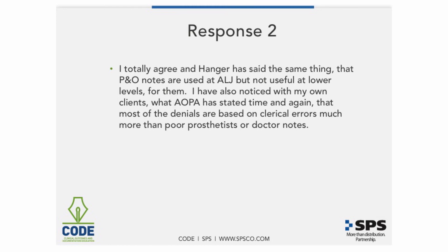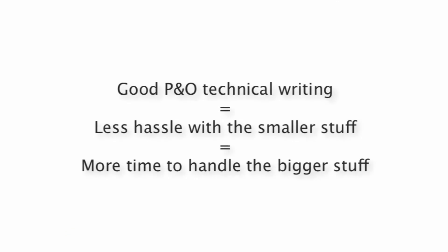I totally agree with what they're saying here, and it's true that Hanger has said the same thing — they don't feel they can use the P&O notes until they get to the ALJ level either, and at this point the ALJ is about worthless because it's pushed out so far. I have also noticed with my own clients at Code that, as AOPA has stated time and again, most of the denials currently are based on clerical errors — much more than poor prosthetist notes or doctor's notes. As clerical errors and denials due to poor procedures decrease with improved front office protocols, we should see our overall denials go down. However, as practitioners, learning to write better notes ensures that we won't waste time fighting denials due to poor doctor's notes on cock-up wrist splints, and we can spend our efforts getting good medical documentation on microprocessor knees.